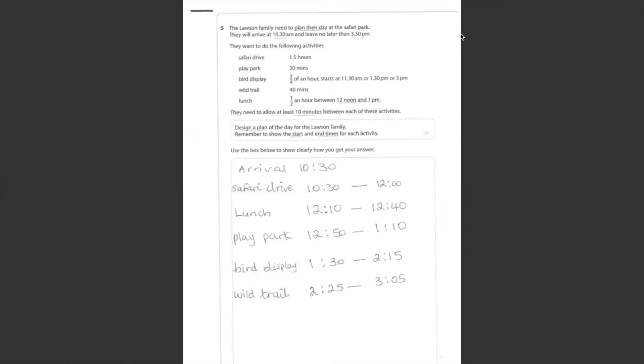Question 5. Lawson family need a plan for their day at the Safari Park. They arrive at 10.30am and leave no later than 3.30pm. These are the activities they would love to do at the park. The most important thing that cannot be changed is lunch time. Your lunch time must be between 12 noon and 1pm. It cannot be before 12 and must not be after 1pm. You need to leave at least 10 minutes between each of these activities.